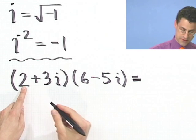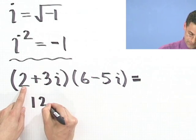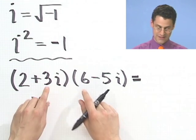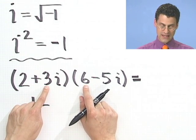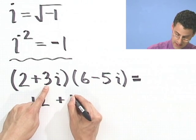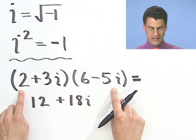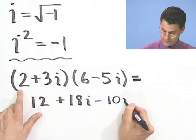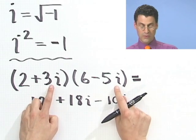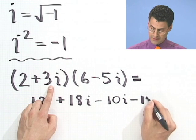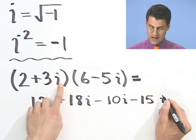So I'm going to multiply 6 times 2, which is 12. Now my inside terms, my insides, my insides are quite large. They look like 18i. So I'm going to put that in, 18i. My outside terms are going to give me a minus 10i. And now what's the last times the last? That's going to be a minus 15, and it's not i, it's i squared.